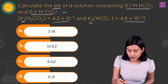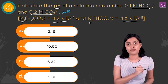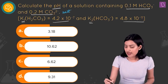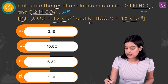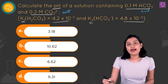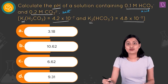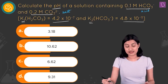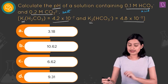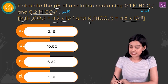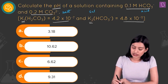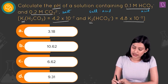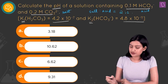You have carbonate ion, which is basically your salt, and then you have the bicarbonate ion, which is basically the conjugate acid. Because of this, your salt to acid concentration ratio is nothing but 2 is to 1.